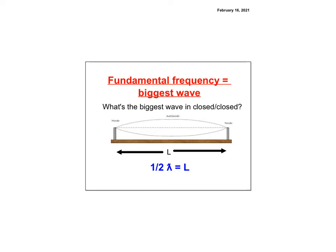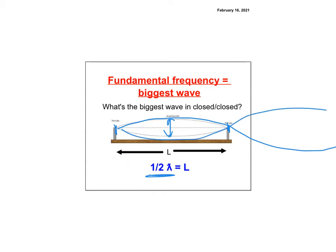Now let's talk about length versus frequency. Imagine a jump rope with two people swinging it up and down — you get standing waves. You have to hit a certain frequency to make the amplitude really big and make it resonate, similar to pushing a swing. If you wiggle it just right, you get a nice big wave. The length of the string from end to end is half a wavelength, so twice the length equals lambda. That's the biggest wave you can get.